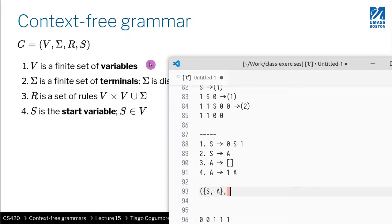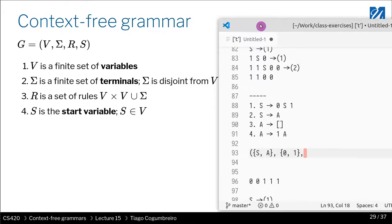Sigma is going to be my terminals. In this case, the terminals are 0 and 1, so let me write 0 and 1. I note that this set is disjoint from this set, so there are no elements in either set. The intersection is empty, basically.